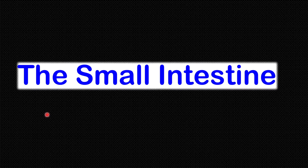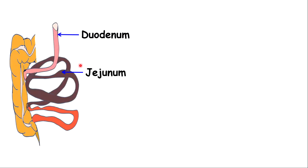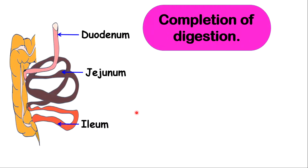The food will leave from the stomach into the small intestine. The small intestine has three different sections: the uppermost part is called the duodenum, the middle portion is called the jejunum, and the last part is called the ileum. In the small intestine, that is where digestion is completed — all digestion ends in the small intestine. In fact, only chemical digestion takes place in the small intestine.